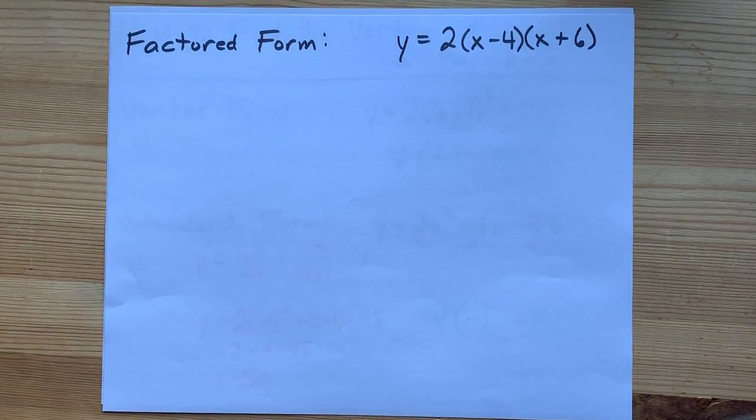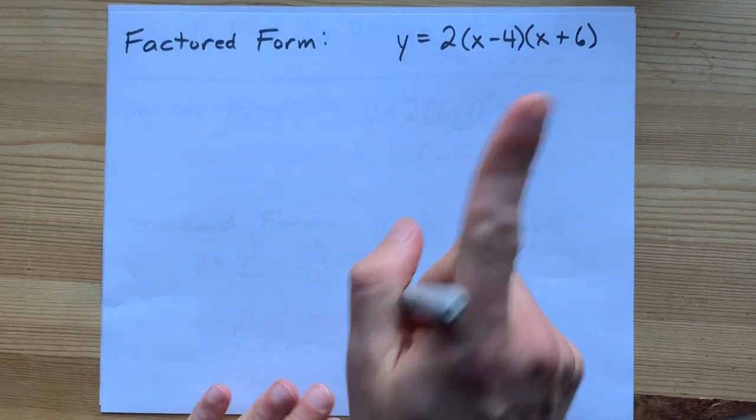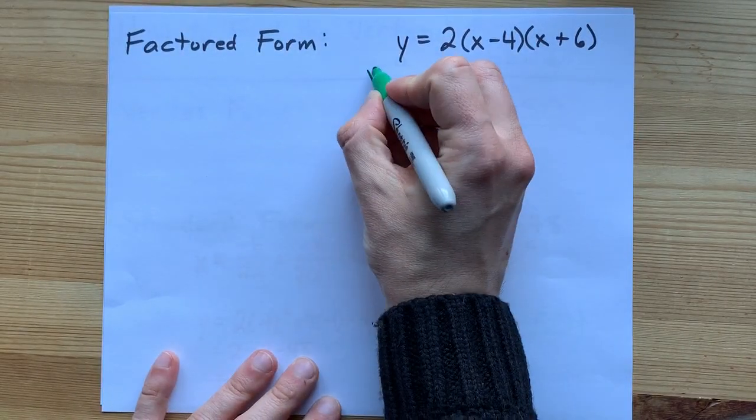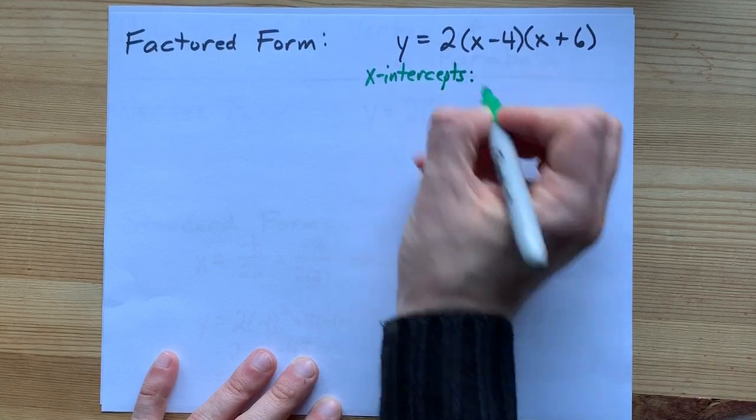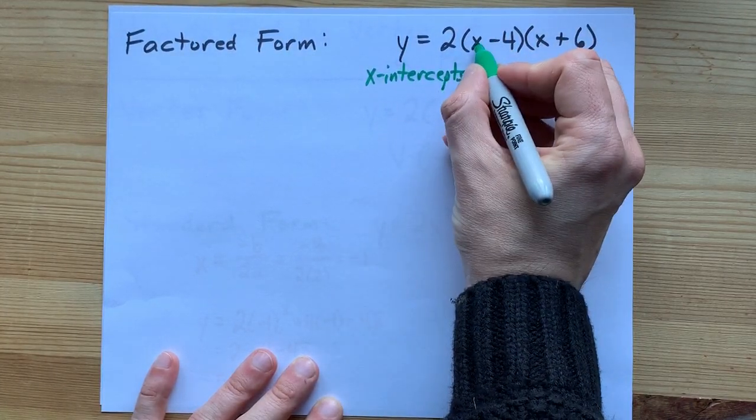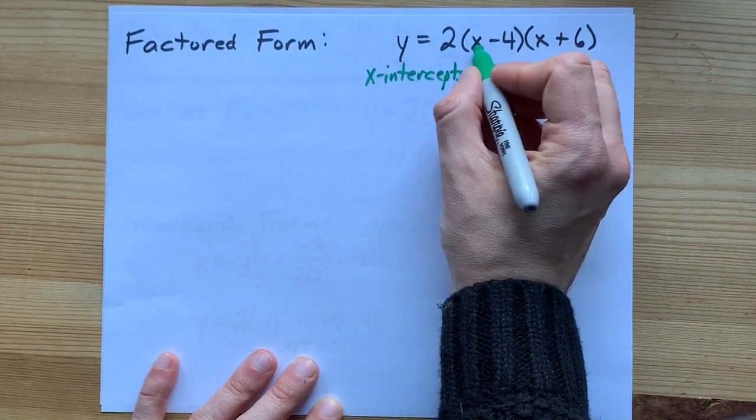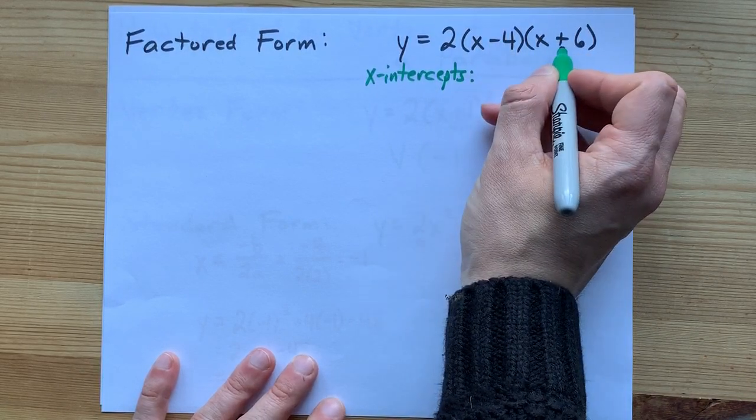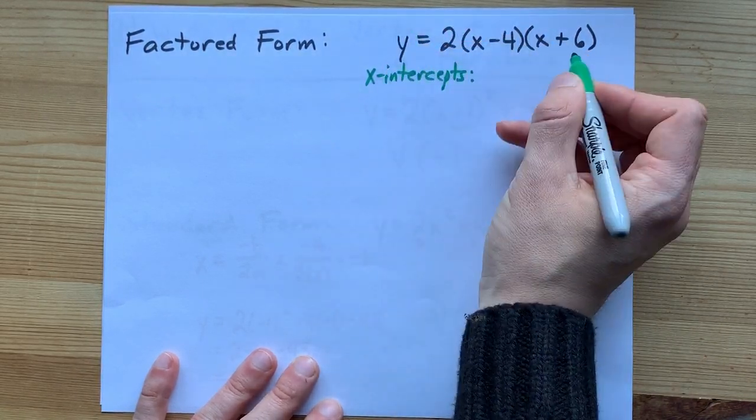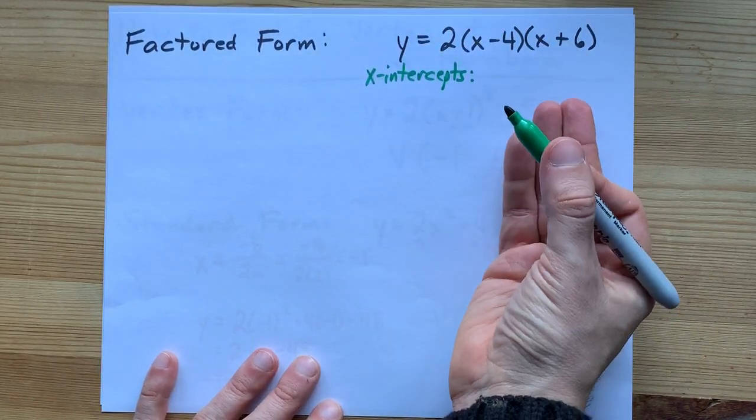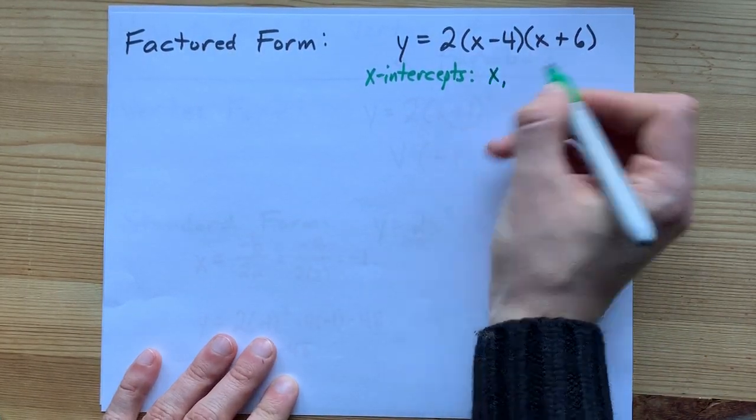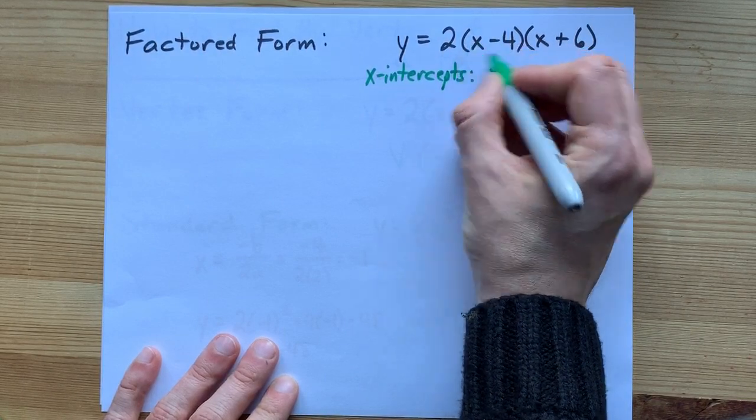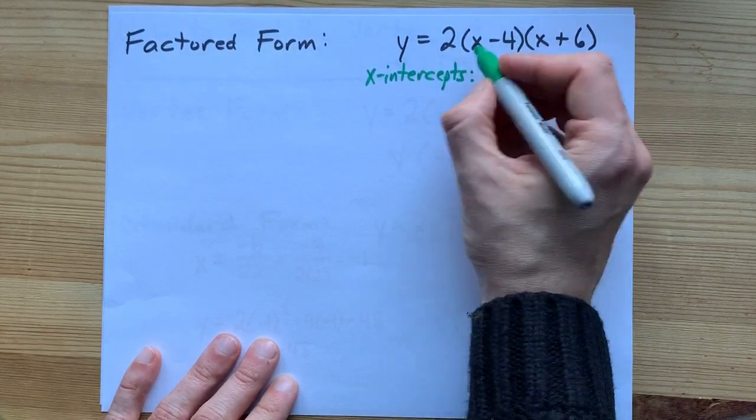Factored form. What does factored form even tell you? Factored form tells you the x-intercepts. You usually don't have to write this for yourself, but I'm going to. The factors, when they themselves are 0, make the whole thing 0. That's what makes something an x-intercept. You probably don't care about that. What you care about is how to get the numbers. You set this whole thing equal to 0, and then you solve for x.